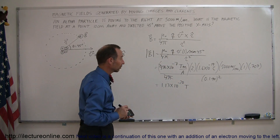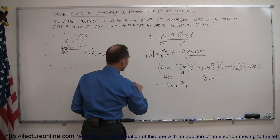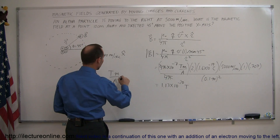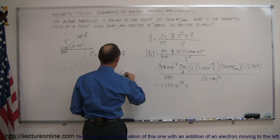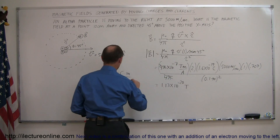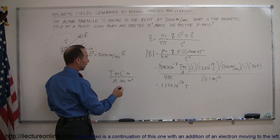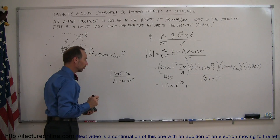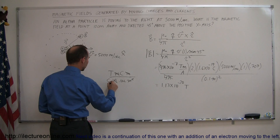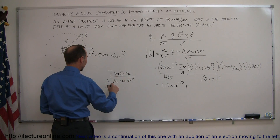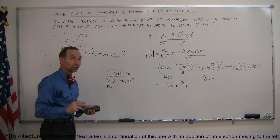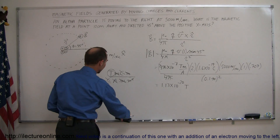So how do we know that's Teslas? Let's work out the units. We have Tesla-meters per amp, times Coulombs, times meters per second, divided by meters squared. The two meters in the numerator cancel out the two meters in the denominator. An amp is a Coulomb per second, so the Coulombs cancel and the 1-over-second cancels with the seconds, and we do indeed end up with Teslas — the unit for magnetic fields.